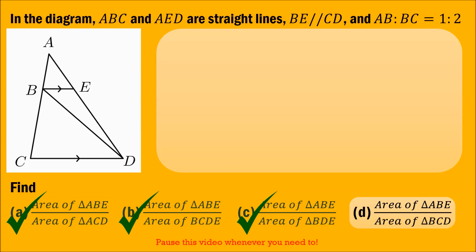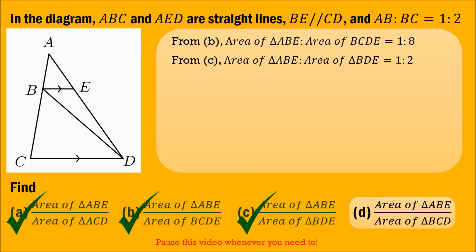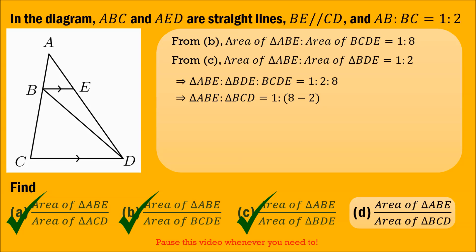Lastly, we need to find the area of triangle ABE over the area of triangle BCD. From part B, triangle ABE over trapezium BCDE is 1 is to 8, and from part C, triangle ABE over triangle BDE is 1 is to 2. Combining these ratios, triangle ABE is 1, BCDE is 8. Triangle BCD is a subtraction of triangle BDE from the trapezium, so triangle ABE to triangle BCD is 1 to 8 minus 2, which is 1 to 6. Therefore, the area of triangle ABE over the area of triangle BCD is 1 over 6.